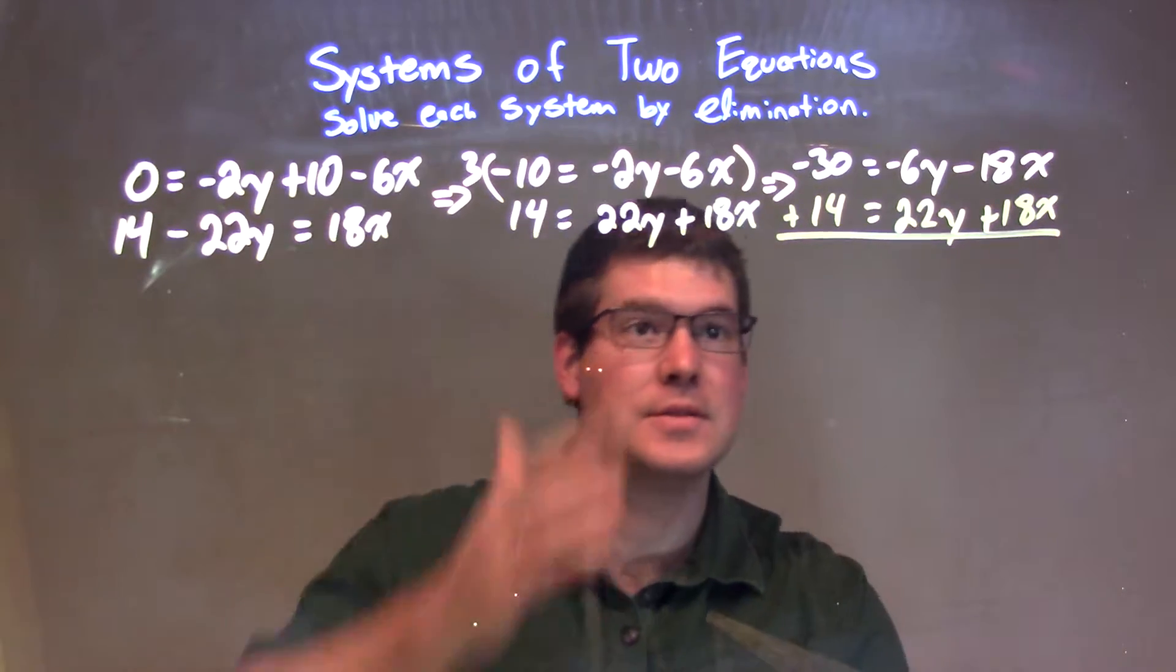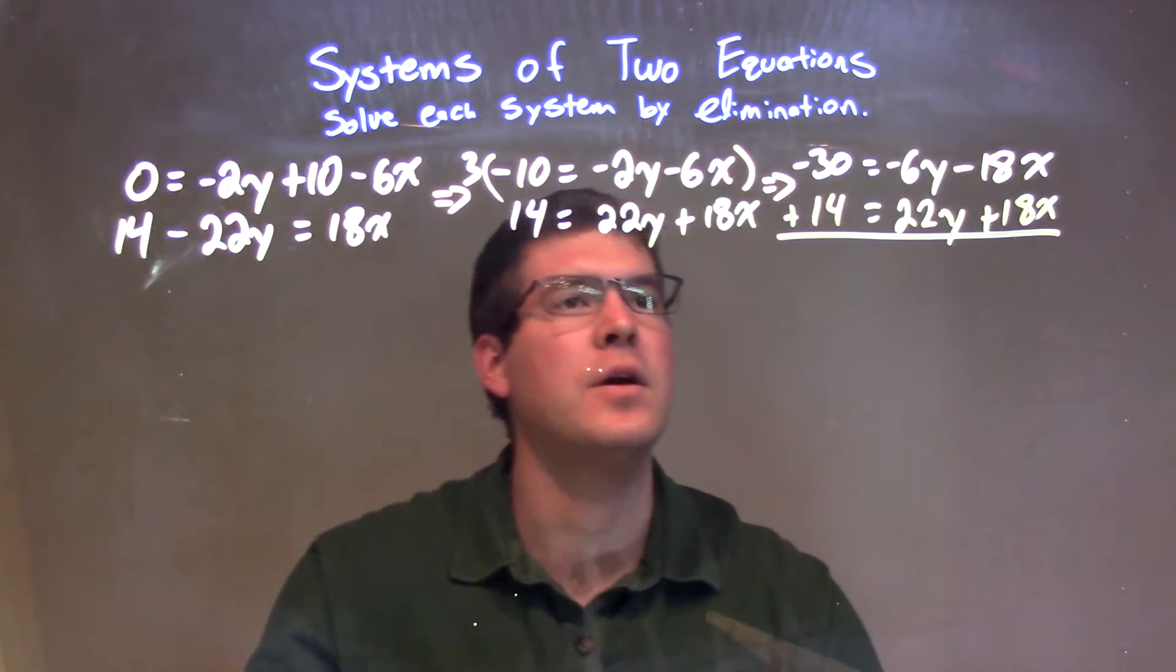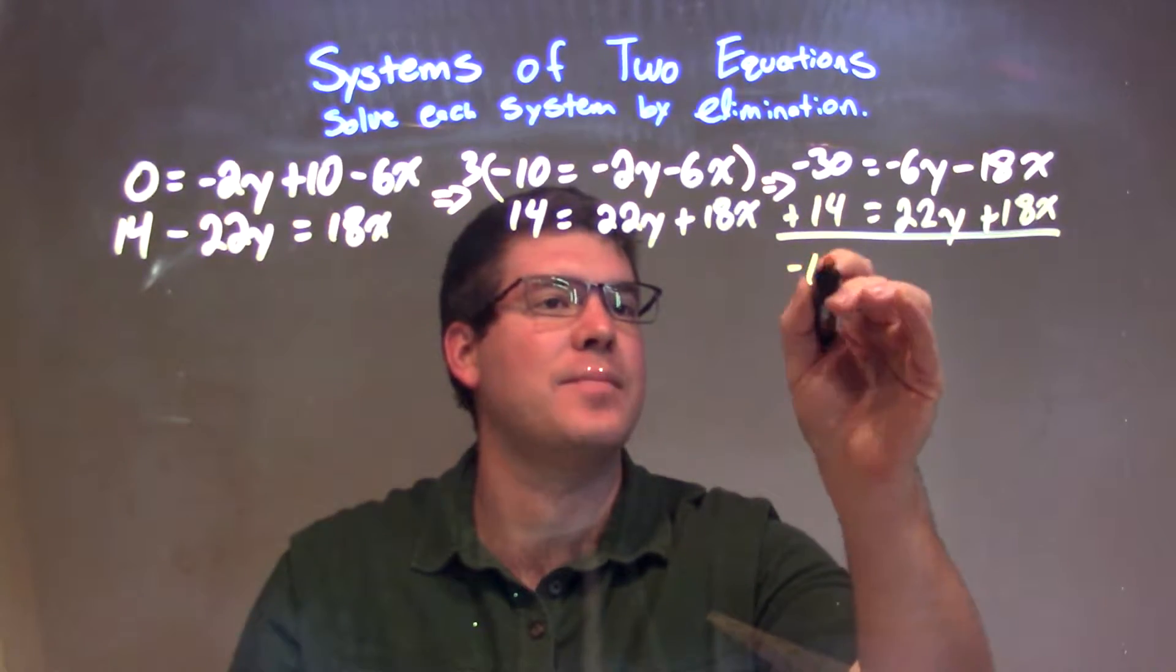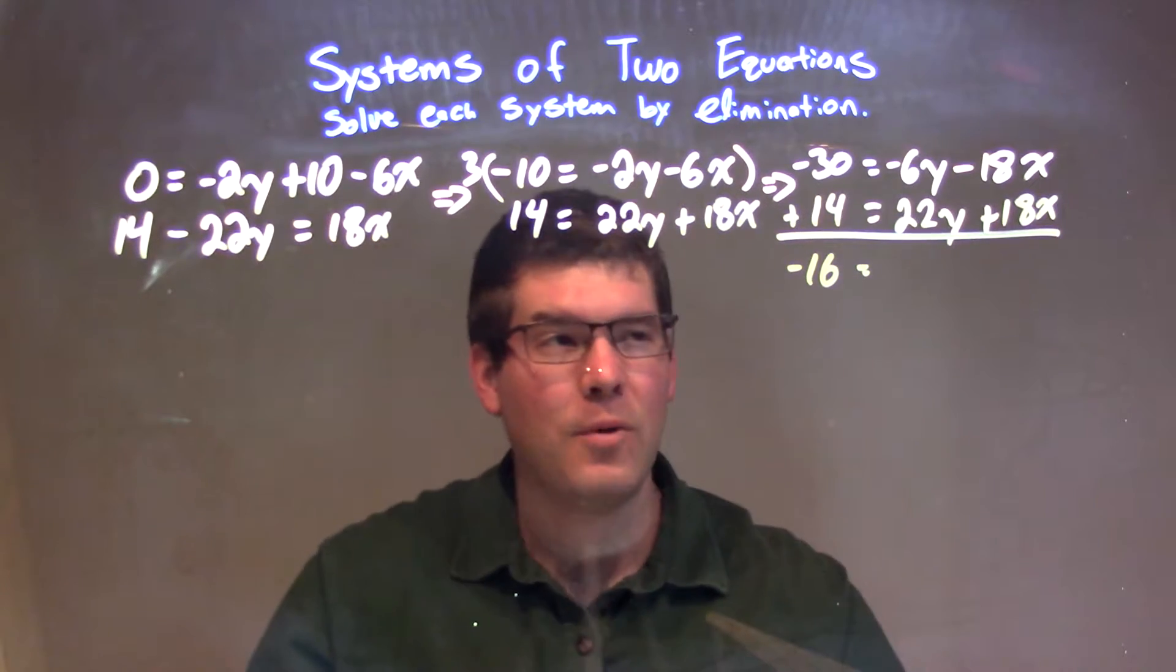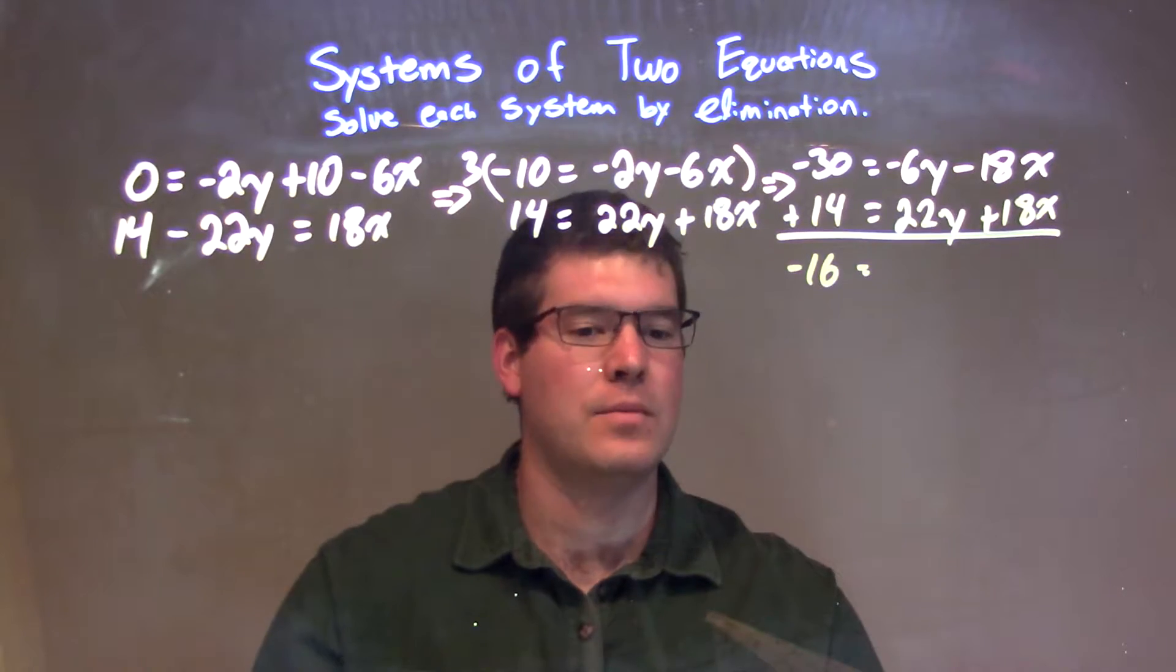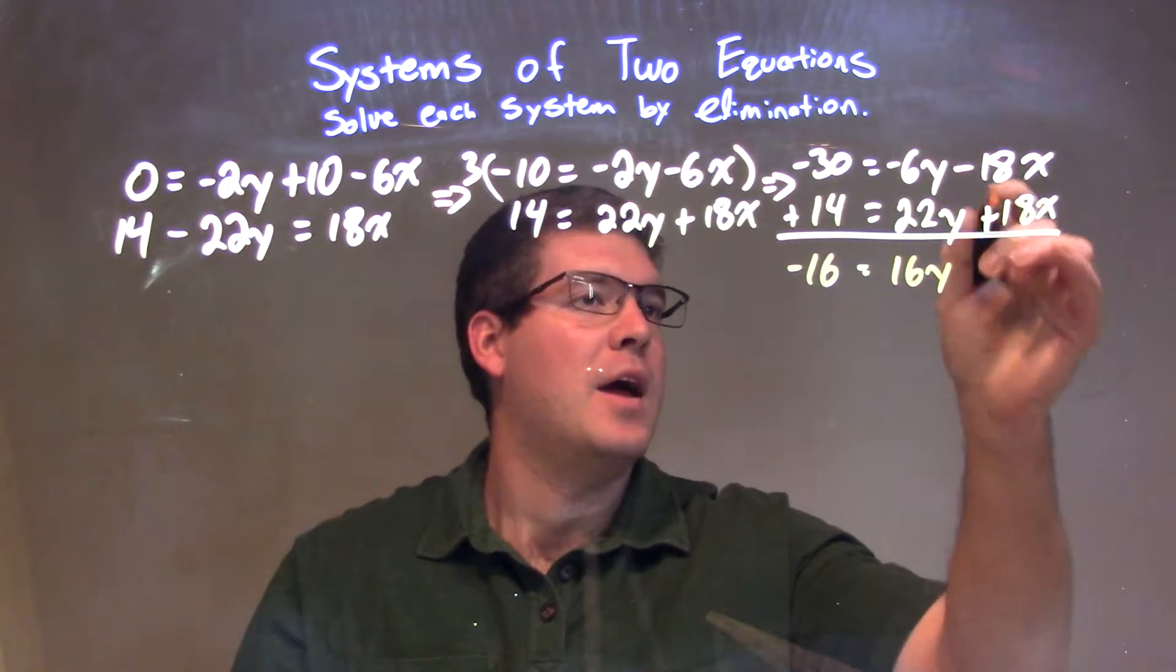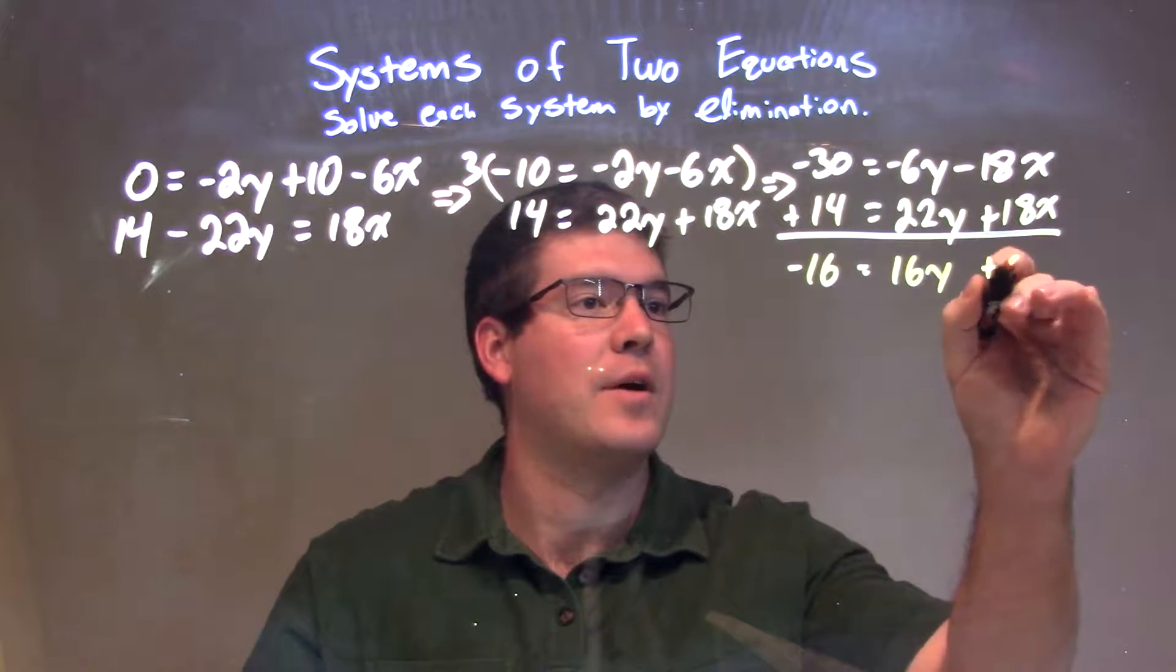We add these two equations together, top down. When we add them together, negative 30 plus positive 14 is negative 16. Negative 6y plus 22y is 16y. And then negative 18x plus 18x is 0.